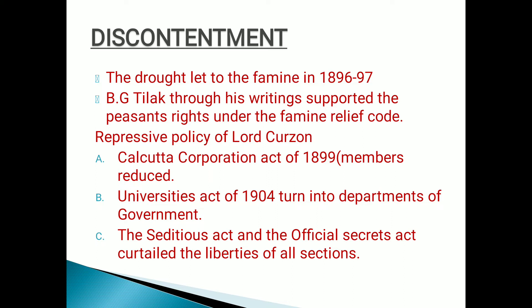But later on, what made Indians rise further against the Britishers? The drought led to famine in 1896–97. This was the first major dissatisfaction — why Indians were dissatisfied with the Britishers. Drought hit the whole of India in 1896–97 and they were not doing anything. They were not even doing the welfare of Indians, not providing relief and support. That's why Indians were very angry. Bal Gangadhar Tilak was an assertive who through his writings supported the peasants under the famine relief code.